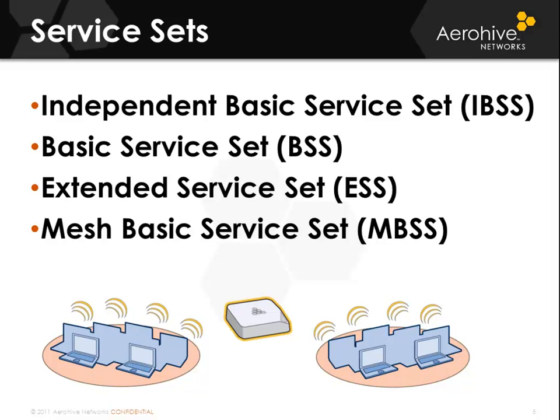There are different types of service sets: an independent basic service set, basic service sets, extended service sets, and a mesh basic service set. An independent basic service set is what we traditionally refer to as an ad hoc network. Basic service sets are access points and any associated clients. Extended service sets are multiple access points using the same SSID and same security principles. A mesh basic service set is a group of APs meshed together to form a mesh network.